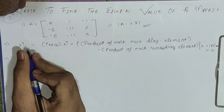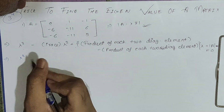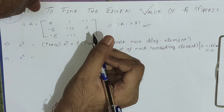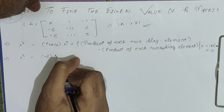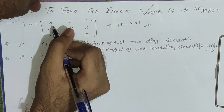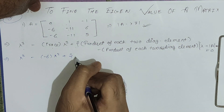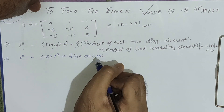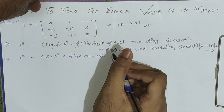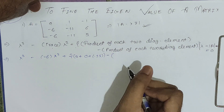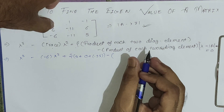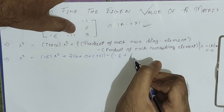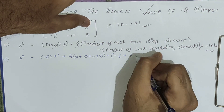Filling in the formula: the trace is the sum of diagonal elements, so here it will be minus 11 plus 5 equals minus 6, giving minus 6 lambda squared. The product of each pair of diagonal elements: 0 into minus 11 is 0, plus 0 into 5 is 0, plus minus 11 into 5 is minus 55. Then we subtract the products of non-diagonal element pairs: minus 6 into 1 is minus 6, minus 6 into minus 1 is plus 6, minus 11 into 6 is minus 66.